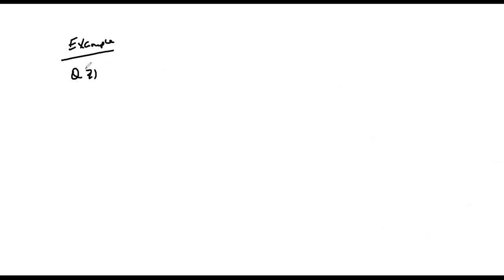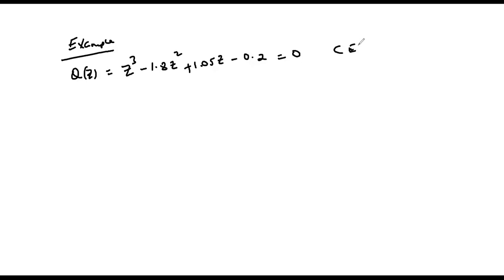We illustrate this with an example. Suppose a discrete time system is given such that its characteristic equation is Q(z) = z cubed minus 1.8 z squared plus 1.05 z minus 0.2 equals zero. We have to analyze the stability of this discrete time system.